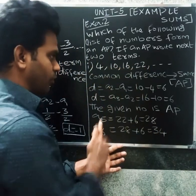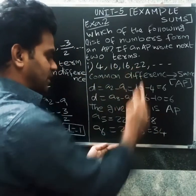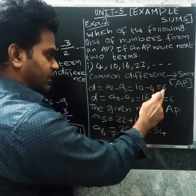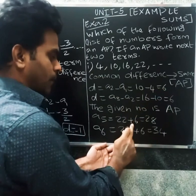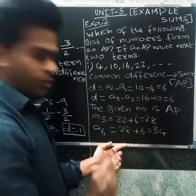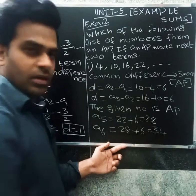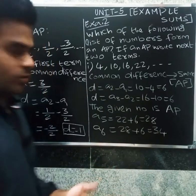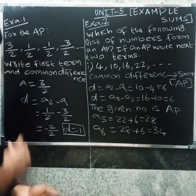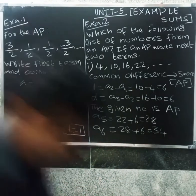A4 value: plus 6, add 6 — equals 28. A6 value: again plus 6 — equals 34. So the next two terms are 28 and 34.